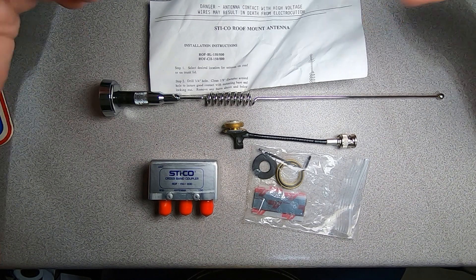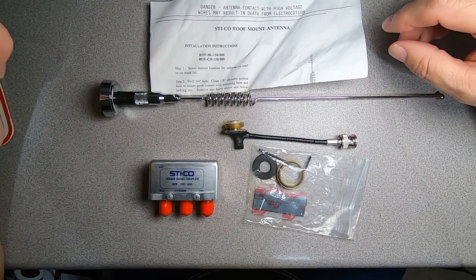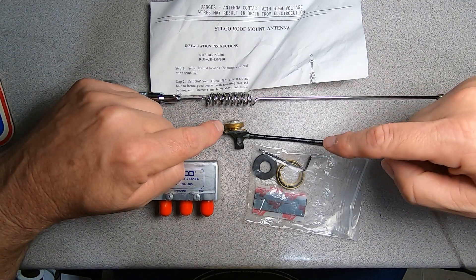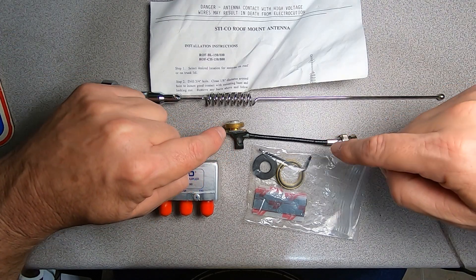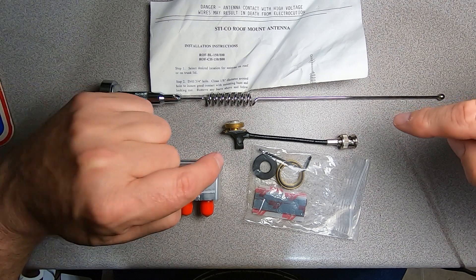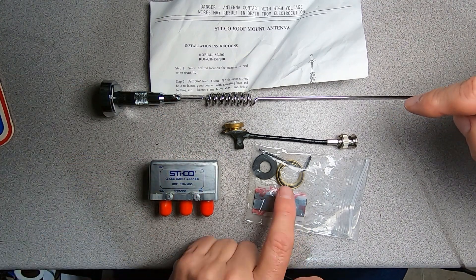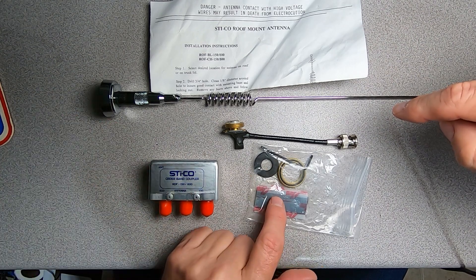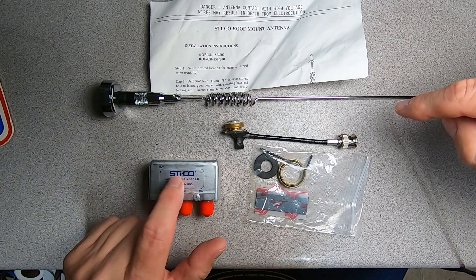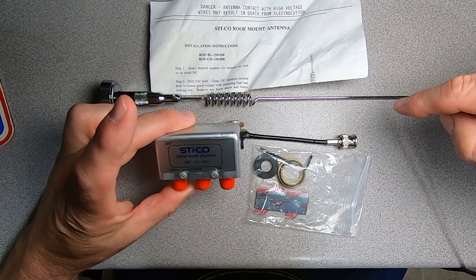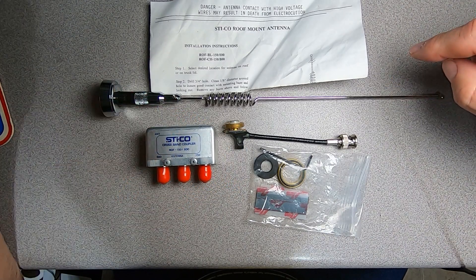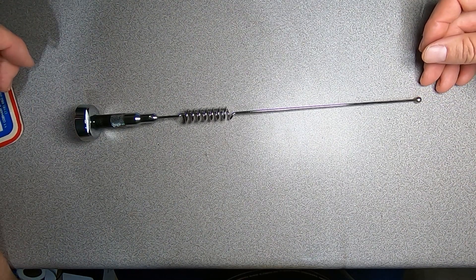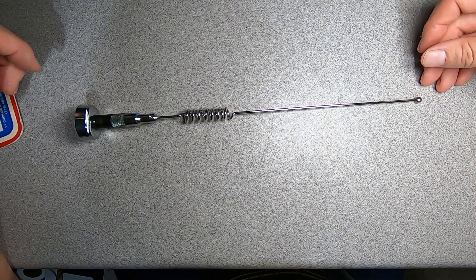Here are our contents laid out. We have a set of instructions which are pretty generic, a 5.8 wave 800 MHz antenna, a short feed line section attached to an NMO base with a modification we're going to talk about in a minute, our ring for our NMO mount, a gasket for our antenna, and some double-sided adhesive to mount this diplexer inside of our headliner.